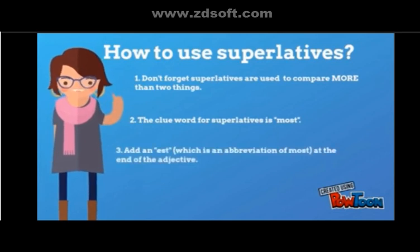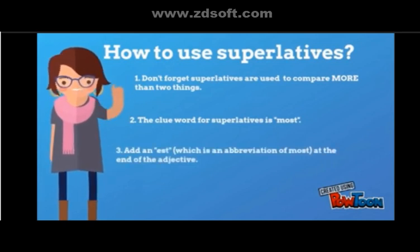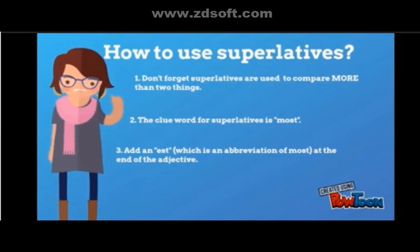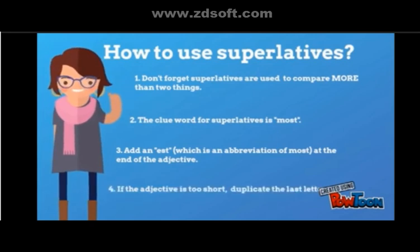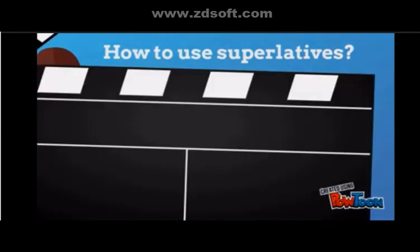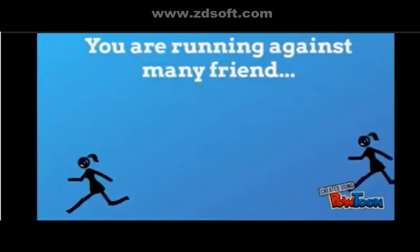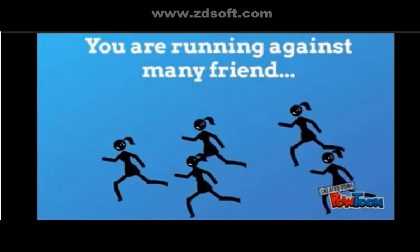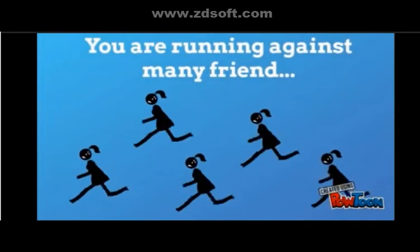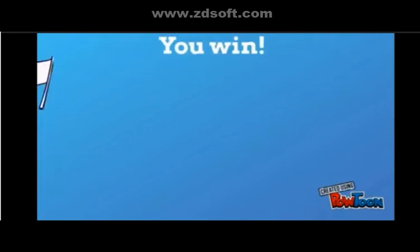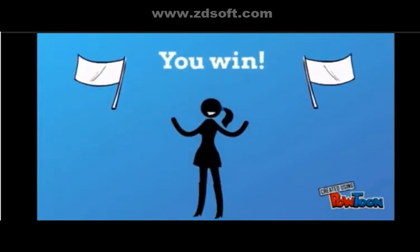The clue word for superlatives is 'most' or adding '-est' — an abbreviation of 'most' — at the end of the adjective. If the adjective is too short, duplicate the last letter. Let's make an example: suppose you're running against many friends and then you win. What would you say to your friends?